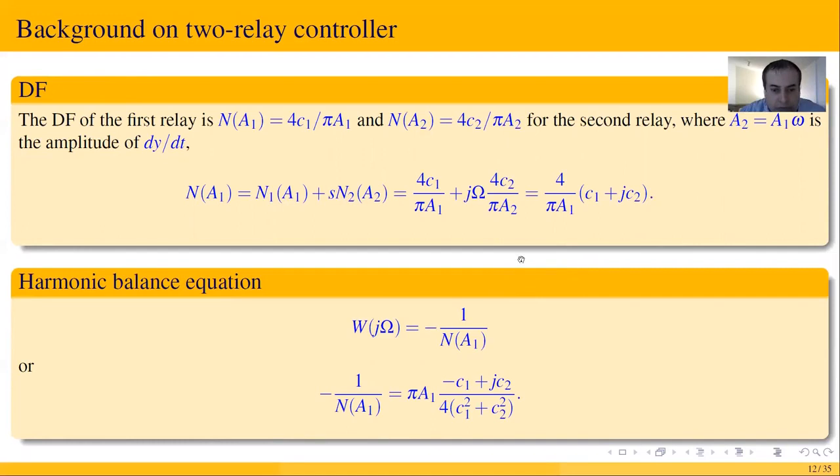That means if this inequality holds, then there exists a periodic motion with amplitude a1 and frequency omega.